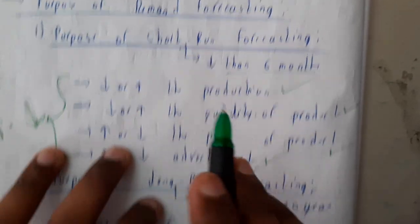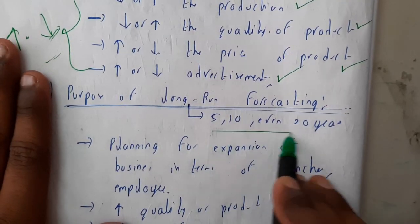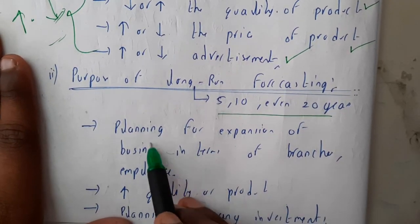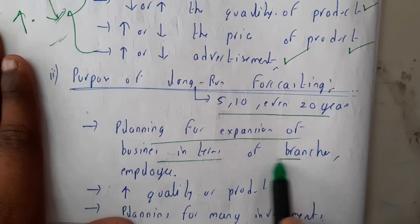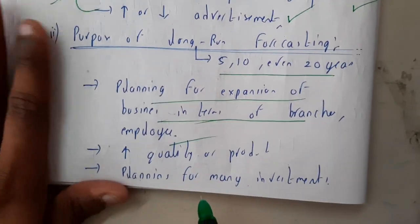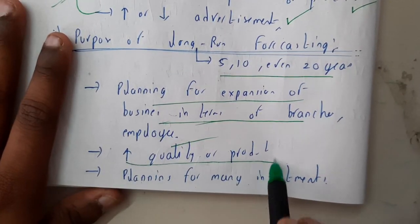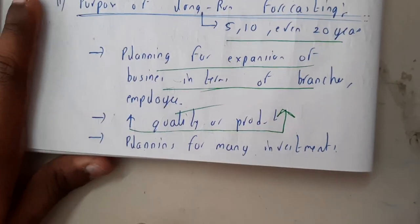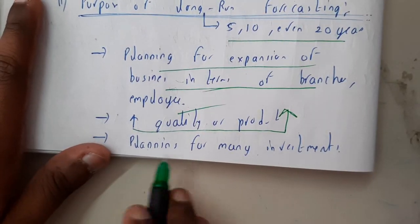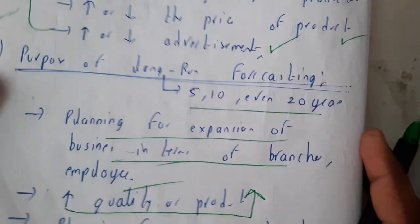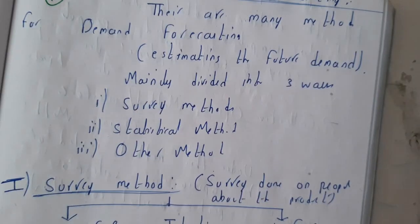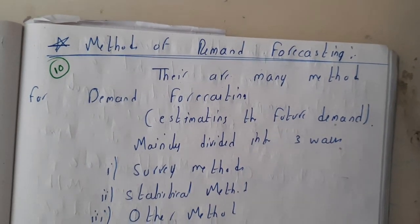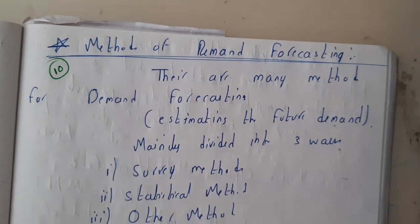Short run is less than six months, and long run is more than five, ten, or even twenty years. In the long run, businesses can plan for the future — opening branches, hiring employees, and rapidly increasing the quality of the product. If the product is doing well, they can do wonders with it. They can also plan for many investments.